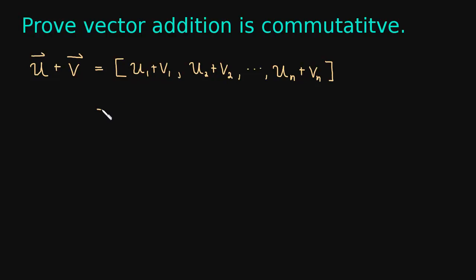And so real numbers we know are commutative. We already know that through addition. So this is the same as v1 plus u1, v2 plus u2.